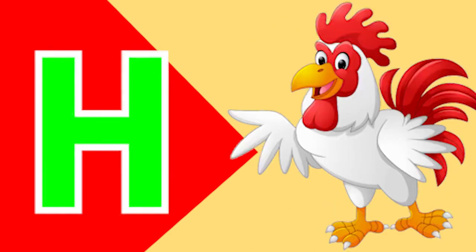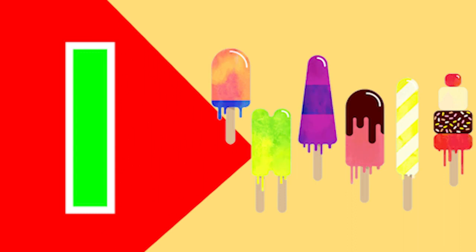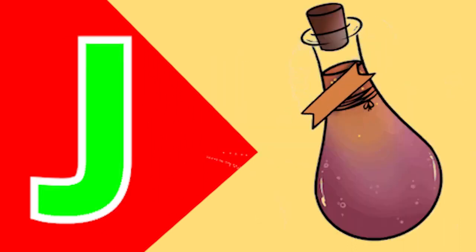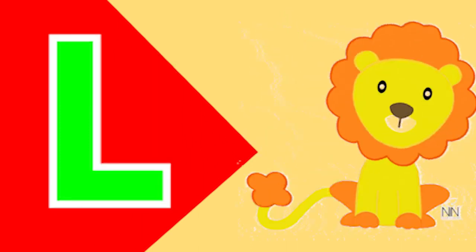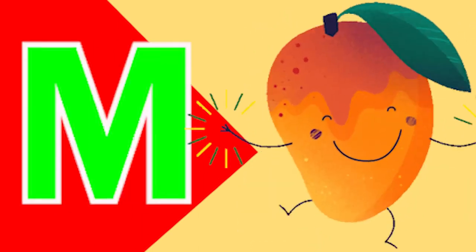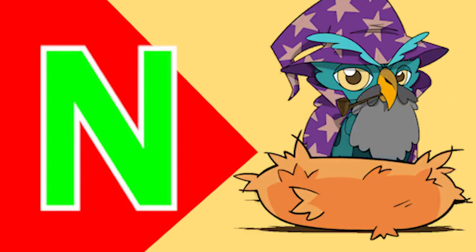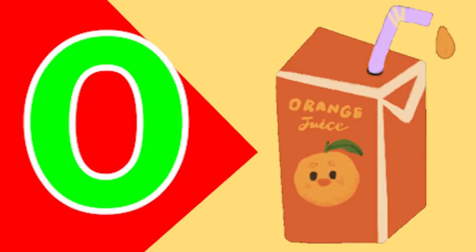H for hen, I for ice cream, J for jack, K for king, L for lot, M for mango, N for nest, O for orange.